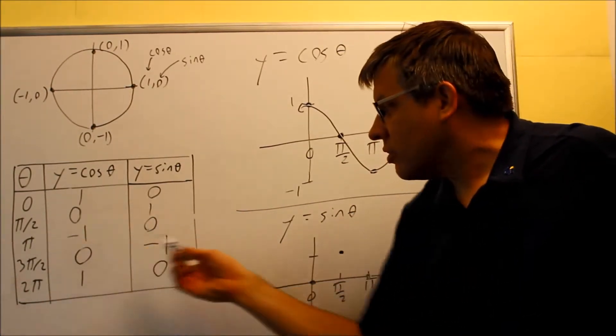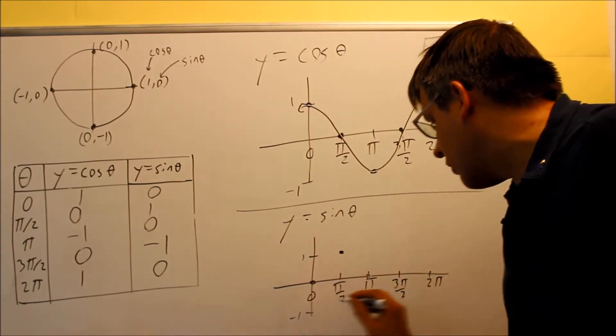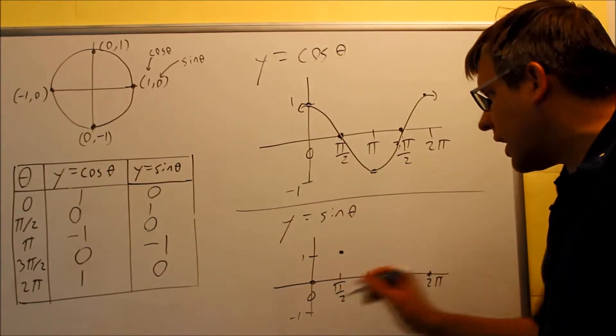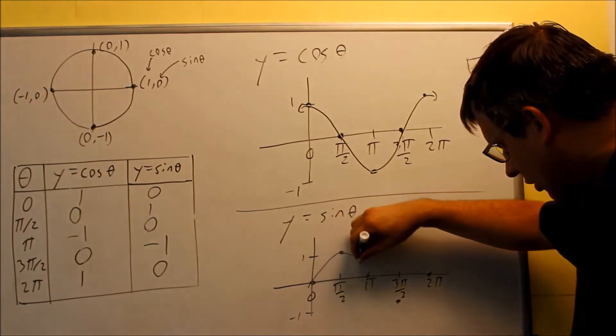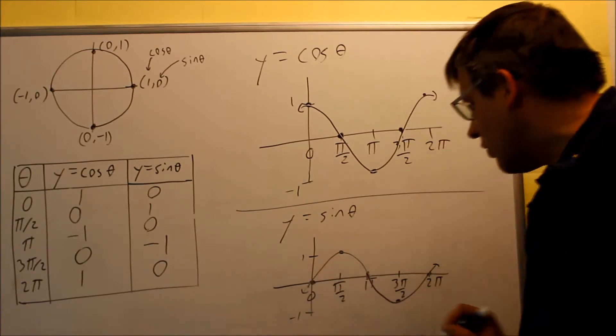At three pi over two, I'm at negative one. So negative one's going to be down here. Here's one, and here's negative one. And then finally, it goes back up to two pi again, I'm back at zero. So here is what one cycle of the sine graph is going to look like.